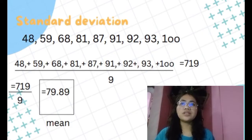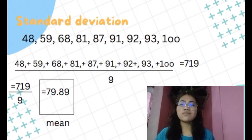Next is standard deviation. First, get the mean by adding all the given numbers. The total is 719, and we have 9 given numbers. So 719 divided by 9 equals 79.89. That's our mean.